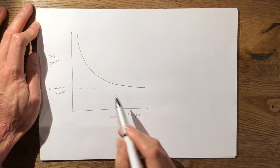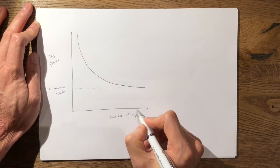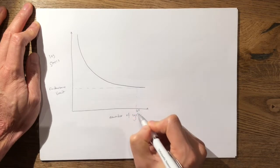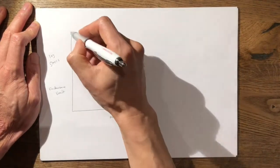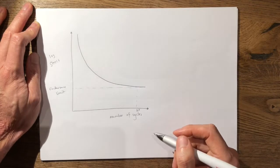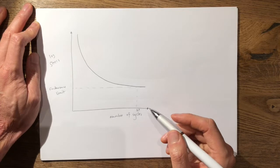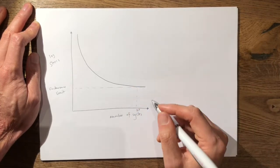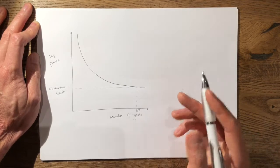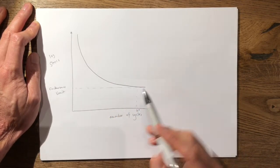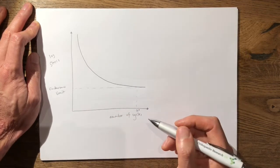For an orthopaedic material this is arbitrarily set at 10 million cycles because clearly you can't indefinitely load a material infinite times to see when it fails. Most orthopaedic manufacturers will say on their implant that their implant can withstand approximately a million cycles per year, so if it can withstand 10 million cycles it should last 10 years.